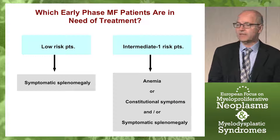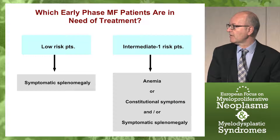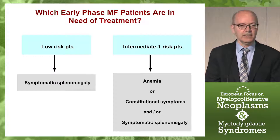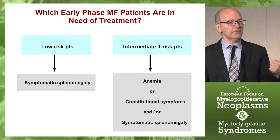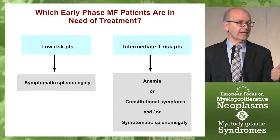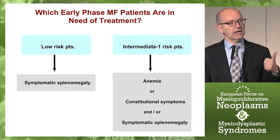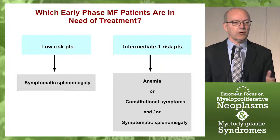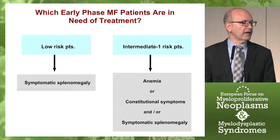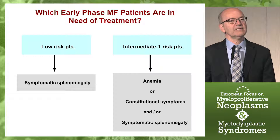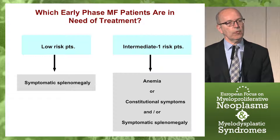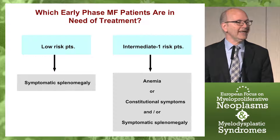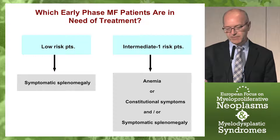In the case of intermediate-one risk myelofibrosis, they need treatment because they can have anemia — one of the poor prognostic factors — or constitutional symptoms, another poor prognostic factor, or symptomatic splenomegaly. So there are more patients in the intermediate-one risk group who are in need of treatment for different reasons.